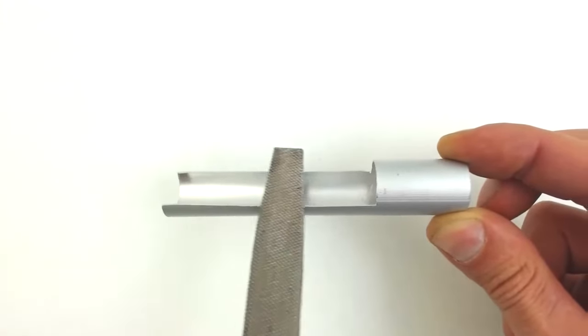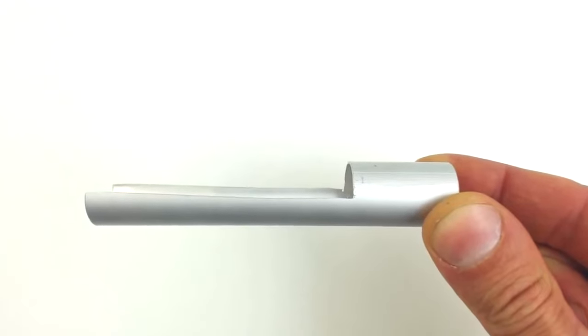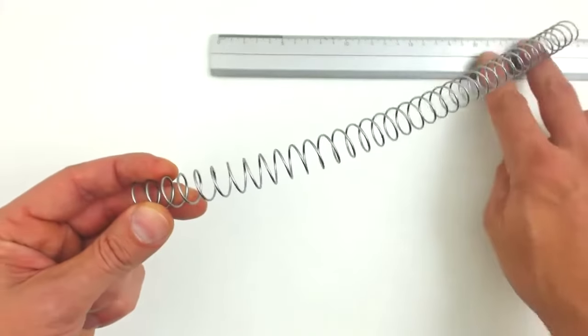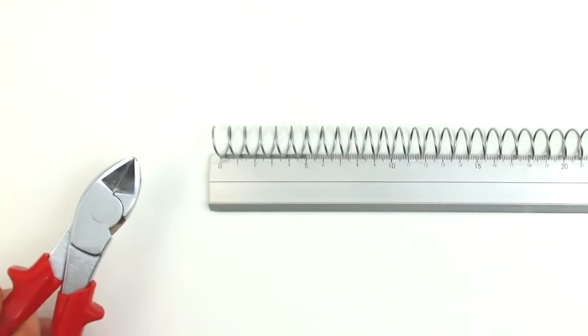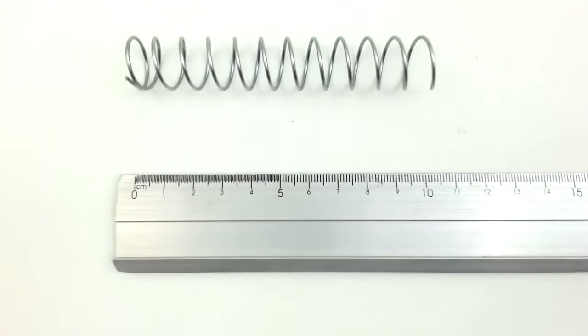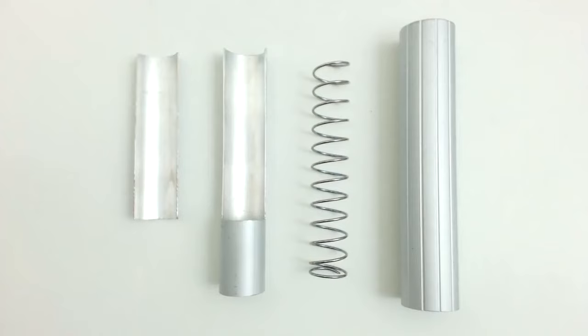The next step will be to select a spring with a lesser diameter than the thinnest tube. We measure 10 cm and cut it with the pliers. These are all the pieces that we have made so far.